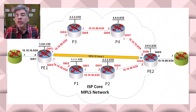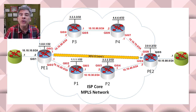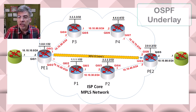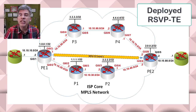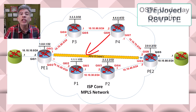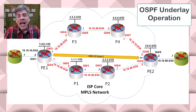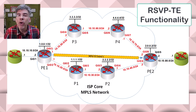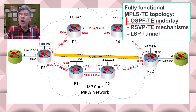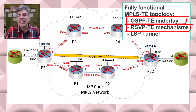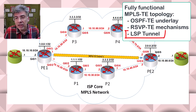In the last few videos we talked about the various components of MPLS TE and we've gradually shown how to configure each of these to create a working MPLS TE topology. We configured and verified the OSPF underlay and we deployed RSVP TE to create the LSP tunnels. We took a look at how the OSPF underlay operates and we also looked in detail at how RSVP TE performs its function. After all of this, we now have a working MPLS TE topology with our OSPF TE underlay and our RSVP TE mechanisms in place and we have our LSP tunnel up and running.